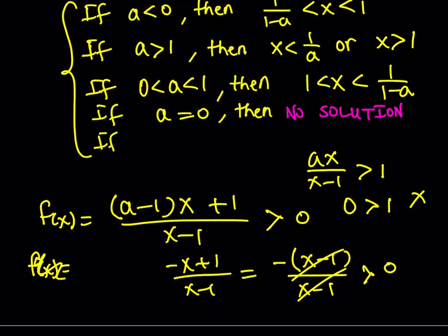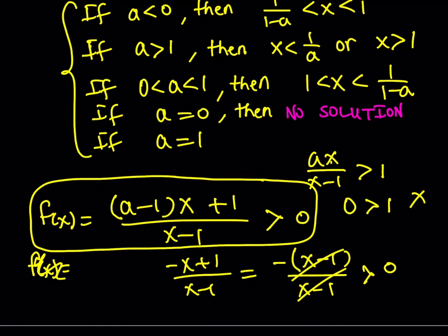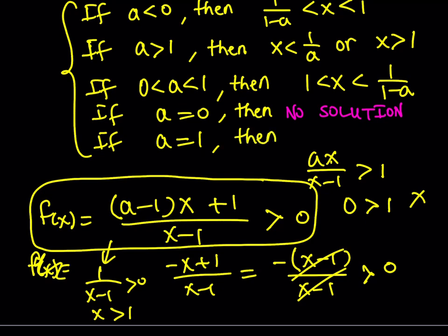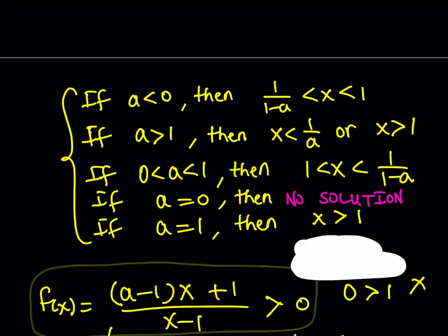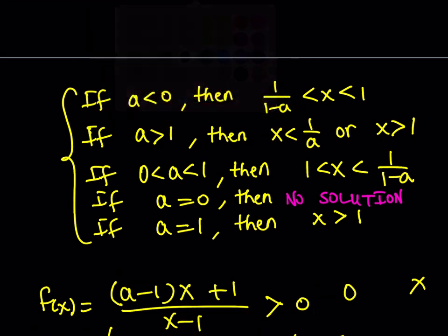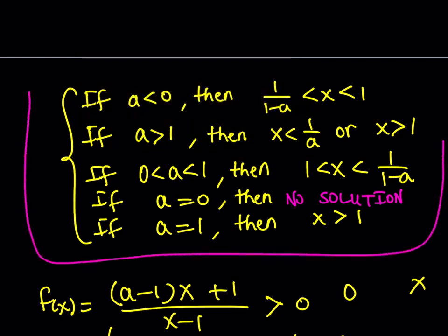What about a equals 1? If you replace a with 1 in f(x), the (a minus 1) factor becomes 0, so you get 1 over (x minus 1) is greater than 0. This is only true if x is greater than 1. So if a equals 1, then the solution set is x greater than 1. That pretty much brings us to the end of this video. Thank you for watching — please comment, like, and subscribe. I'll see you tomorrow with another video. Until then, be safe, take care, and bye-bye.